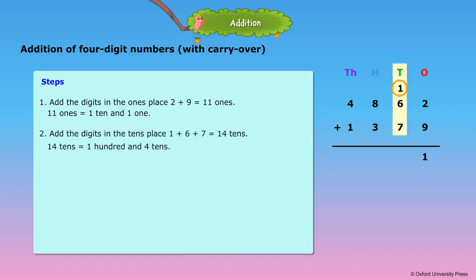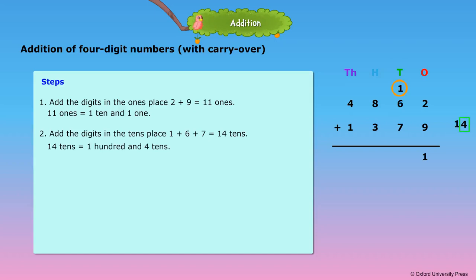Step 2: Add the digits in the tens place. 1 plus 6 plus 7 is equal to 14 tens. 14 tens is equal to 1 hundred and 4 tens. Put 4 tens under 7 in the tens column, and carryover 1 hundred over 8 in the hundreds column.